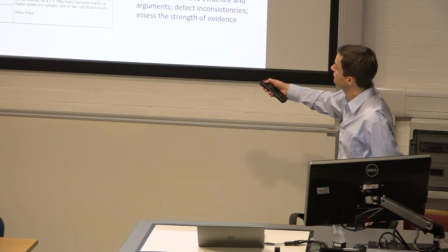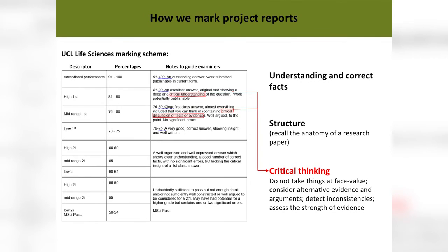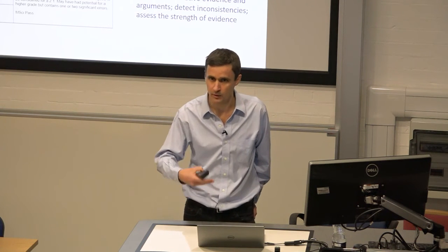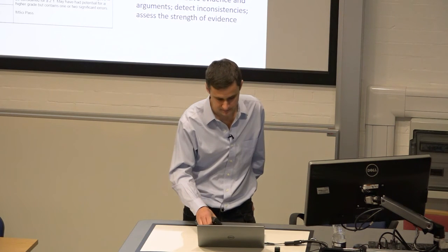It's all about assessing the strength of evidence. And notice that at these very highest grades — anything in the 80s or 90s in the British marking system — these are exceptional. That's when we're talking about papers that could be published in the peer-reviewed primary scientific literature that we've been discussing. So this critical thinking is absolutely key for producing reports of real scientific paper quality.